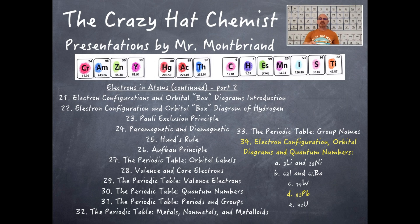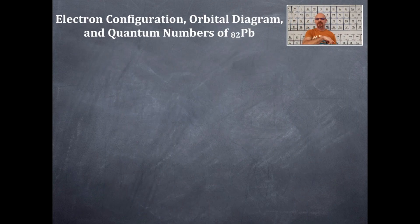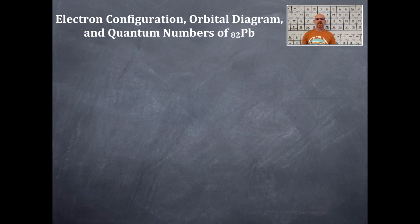Welcome to the Crazy Hat Chemist. Here we go again today with another awesome video on electrons and atoms. So electron configurations, orbital box diagrams, quantum numbers, valence electrons — all that kind of stuff for Pb82, Lead-82.